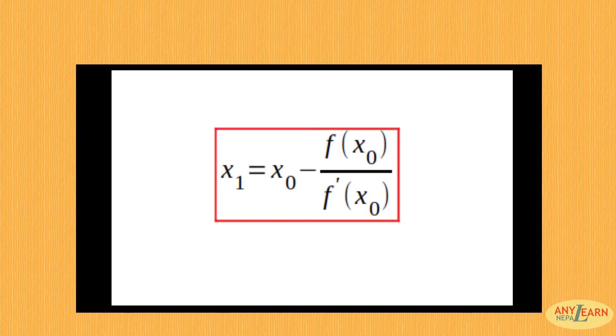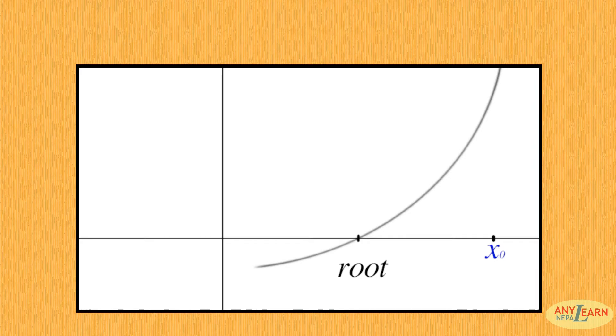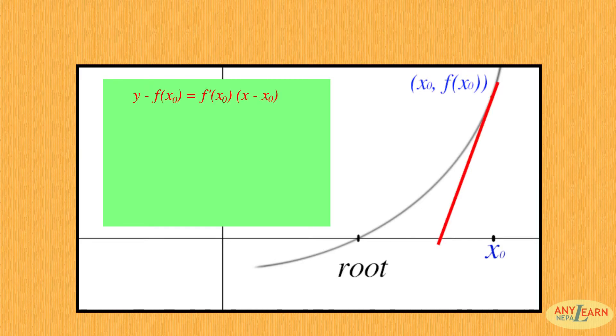Now let's see how that formula can be derived from this process. Here x0 is our approximated root. The point (x0, f(x0)) is the corresponding point on the curve. The equation of the tangent at that point is y minus f(x0) equals f'(x0) times (x minus x0).